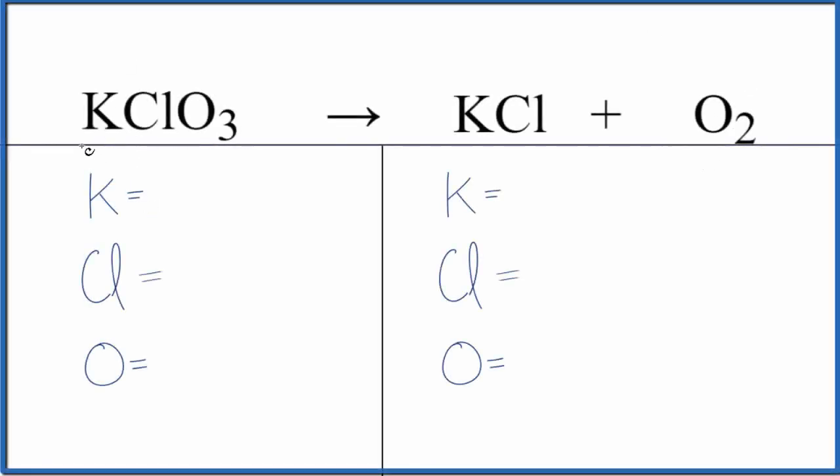Let's balance the chemical equation KClO3 yields KCl plus O2. We'll also look at the type of reaction and write the states.